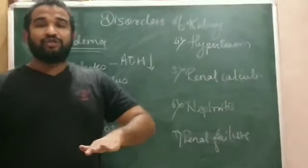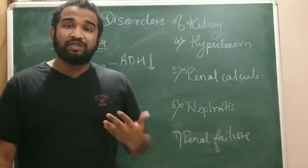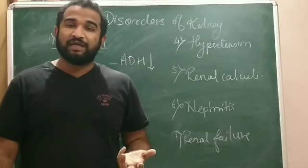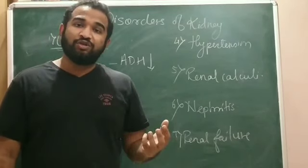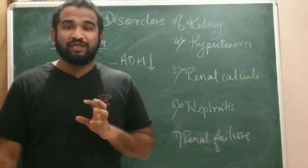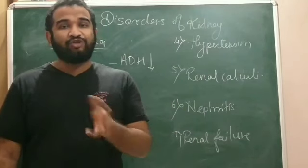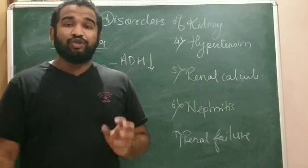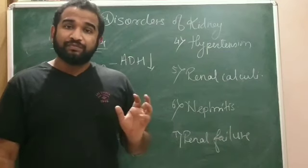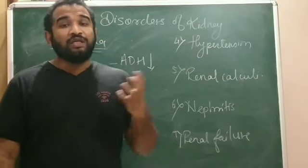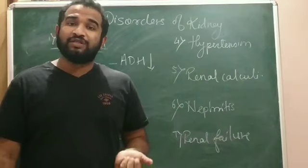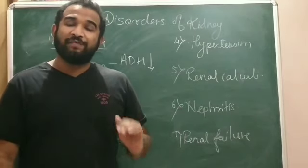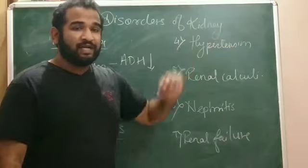The next condition is hypertension, which is related to the synthesis of renin. When more renin is synthesized, more angiotensinogen gets converted into angiotensin 1, and angiotensin 1 gets converted into angiotensin 2. This causes an increase in blood pressure, and that condition is called hypertension due to renin.